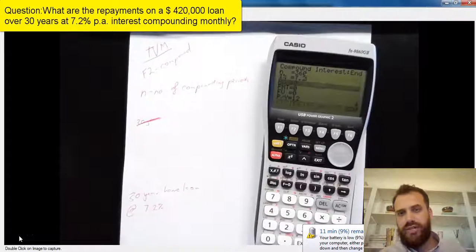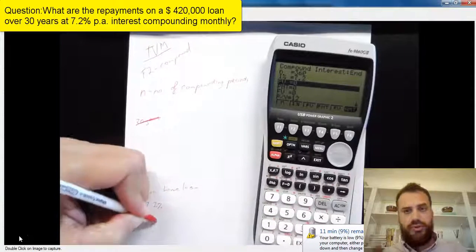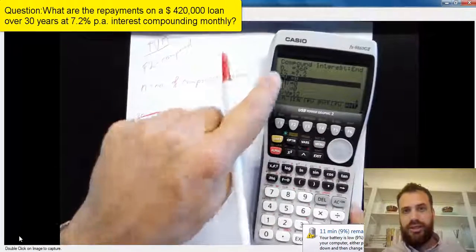Alright, so we've got an interest rate of 7.2%. Now, when you type it in, actually type it in as 7.2. Don't convert it to a decimal, okay? 7.2.